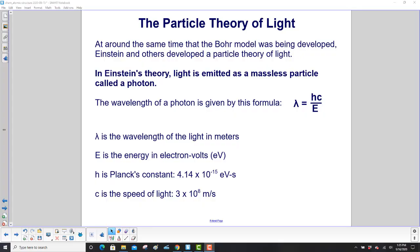What does 10.2 eV of light look like? At around the same time that the Bohr model was being developed, Einstein and others developed a particle theory of light, which actually started way back with Isaac Newton. In Einstein's theory, light is emitted as a massless particle called a photon. Massless meaning it has no mass. The wavelength of a photon is given by this formula.